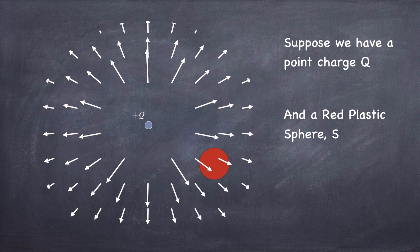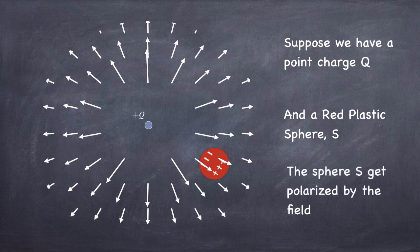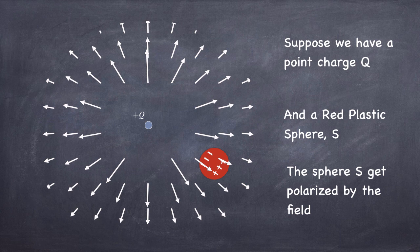What's going to happen to the charges in the red sphere? Well, the atoms of the red sphere are going to become polarized, and so the net effect is that some net positive charge is going to end up on the far side of the sphere, and a net negative charge is going to end up on the near side of the sphere. You can think that the electric field is pulling negative charges to the left and pushing positive charges to the right, and so you end up with a polarized sphere.